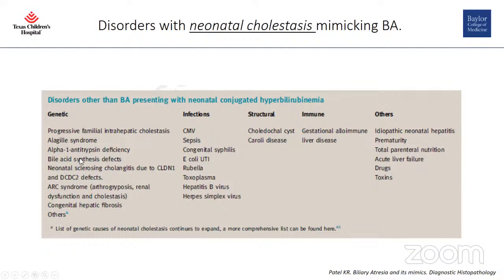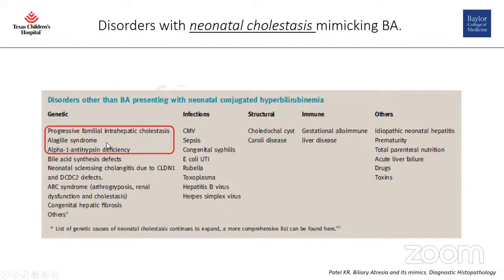Entities that can mimic BA with neonatal conjugated hyperbilirubinemia fall into five categories: genetic, infections, structural diseases, immune-mediated diseases, and others. Genetic entities are quite common. CMV is one of the most common infectious causes. Choledochal cyst and Caroli disease are structural. Gestational alloimmune liver disease can present with neonatal conjugated hyperbilirubinemia, though it doesn't truly mimic BA in its entirety since cirrhosis at birth is not how BA presents. Children with prolonged TPN can very closely mimic BA.